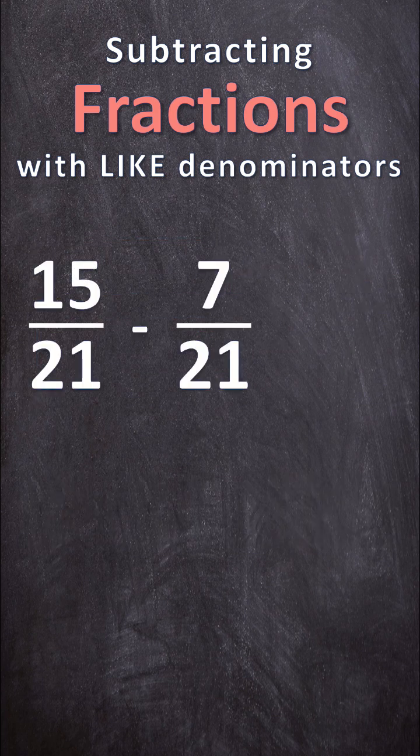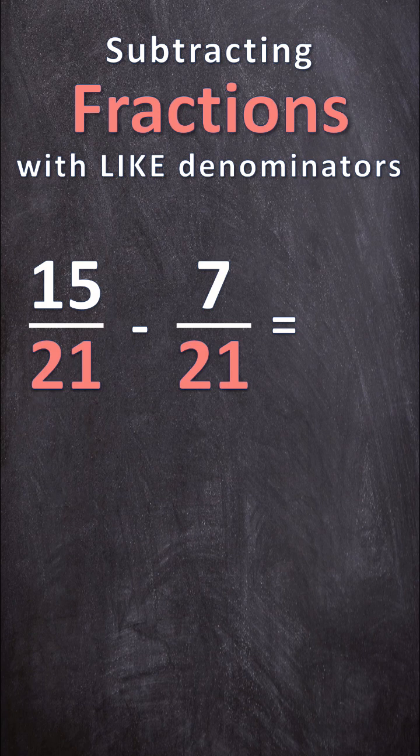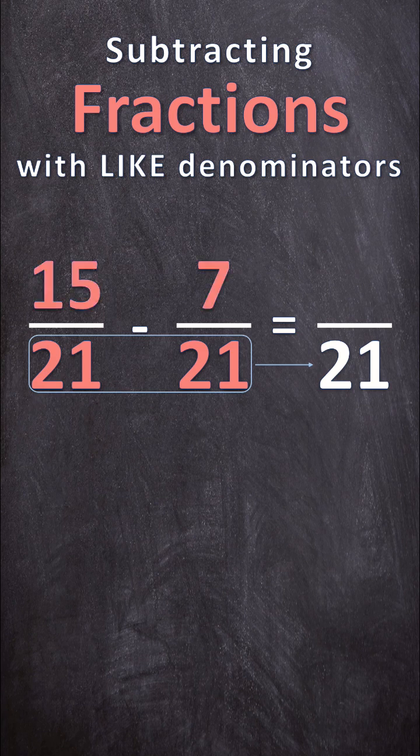And for this example, we have 15 over 21 minus 7 over 21. So we know that our denominator in our answer is going to be the same as our denominators in our question, which is 21, and our numerator is going to be 15 minus 7 and that will be 8.